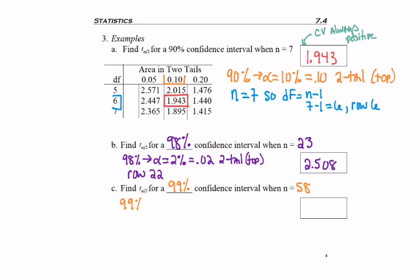Okay, so you should have found that alpha was 1% or 0.01, two tail on the top. Then you wanted to go to row 57, right? We did n minus 1, but I'm sure it caught your eye.